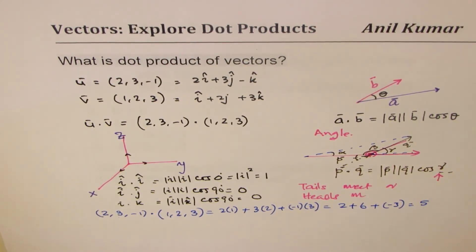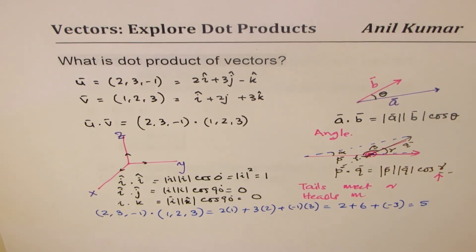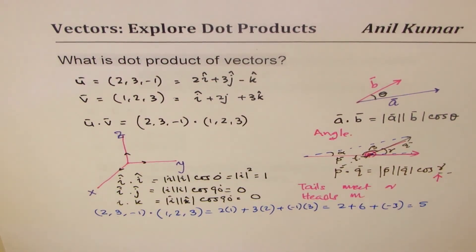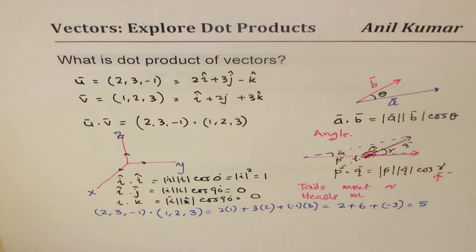I hope you've now understood what the dot product is, that it results in a scalar, and which angle to consider. Let's take up more examples based on what we have learned.